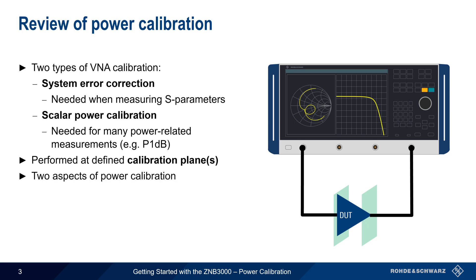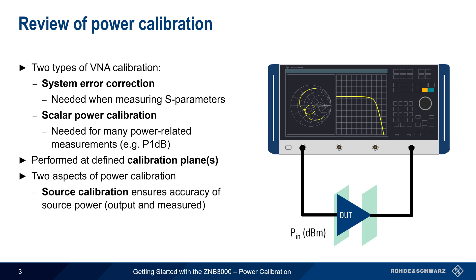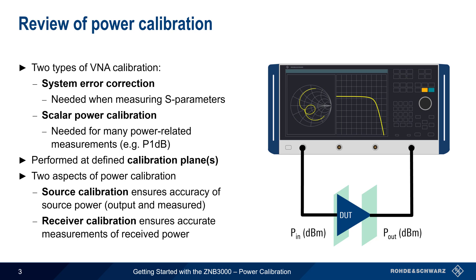There are two general categories of power calibration. Source calibration ensures the accuracy of both the source or stimulus power, as well as the accuracy of the measurement of this power. Receiver calibration, on the other hand, ensures that the received power is being accurately measured. We'll go through how to configure and run power calibration on Rohde & Schwarz's ZNB3000 series Vector Network Analyzers.